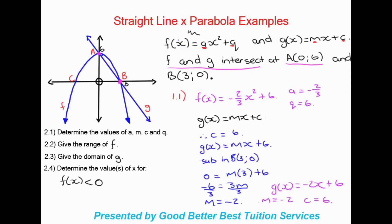We have now found that M = -2 and C = 6, giving us all the information asked for: A = -2/3, Q = 6, M = -2, and C = 6. As we worked through this, we also found the complete equations of both graphs.